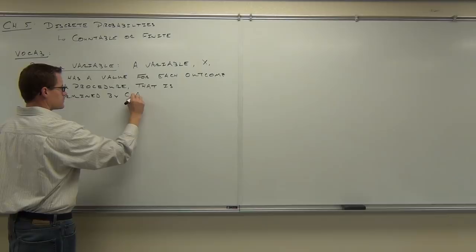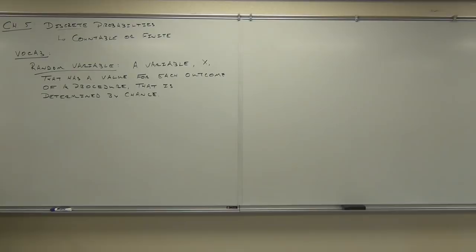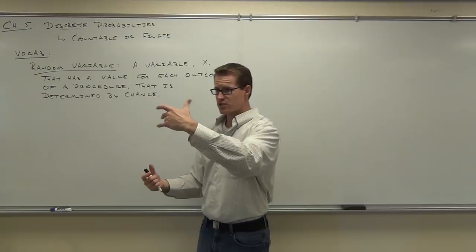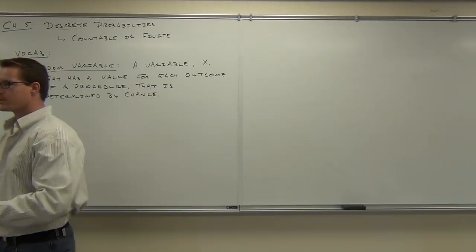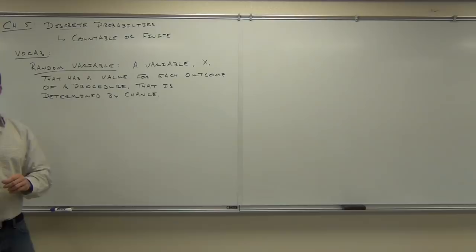Variable X has a value for each outcome of a procedure, and that is determined by chance. Random means by chance; variable means the outcomes that are changeable. Such as rolling a die — we would have a certain number of outcomes. The variable would take the place of those outcomes, and the outcome you get is dependent on the chance of rolling that die.